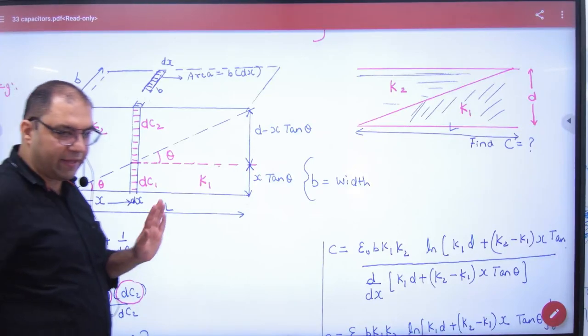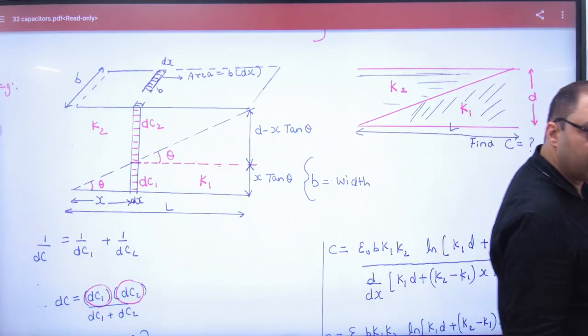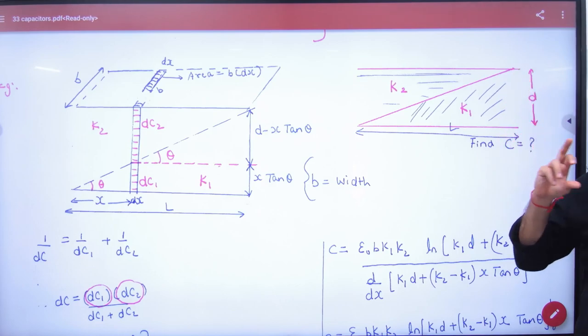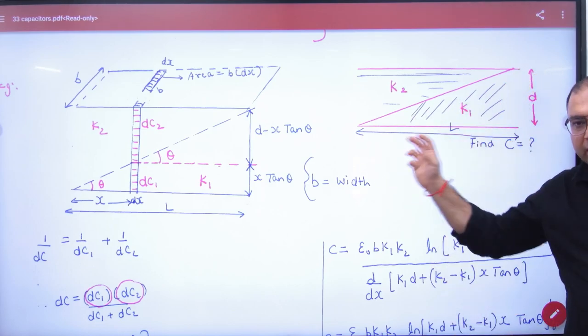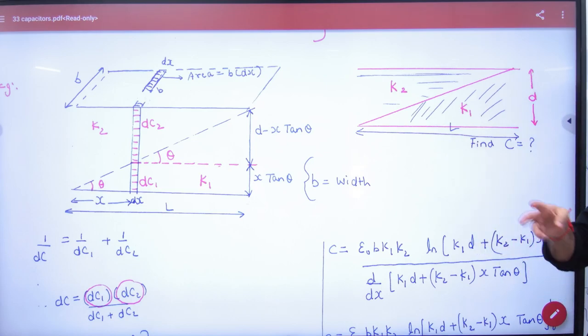So, there is a capacitor, this is D, which is the distance. It doesn't come to NCERT. So this time, how did we build the dielectric? Diagonal. This is K1 and this is K2. Now, what will be the equivalent capacity?